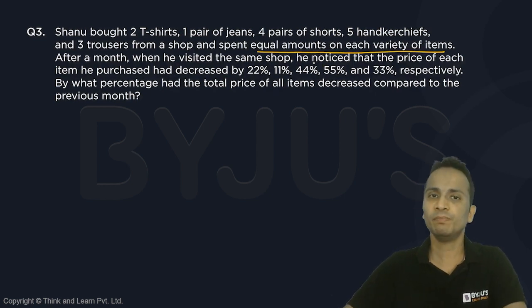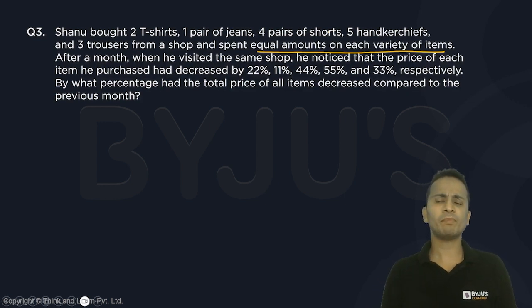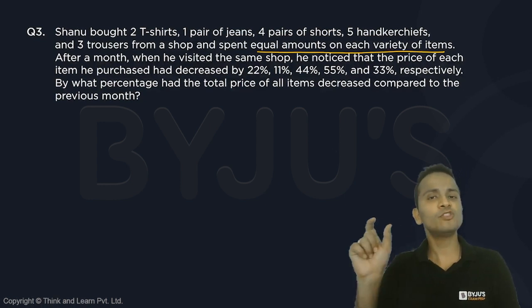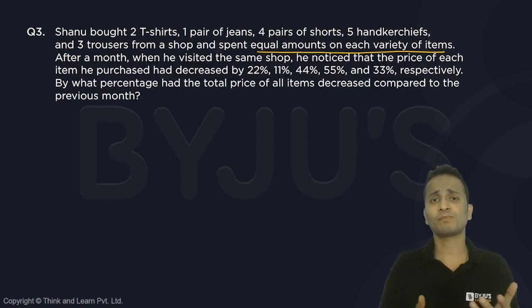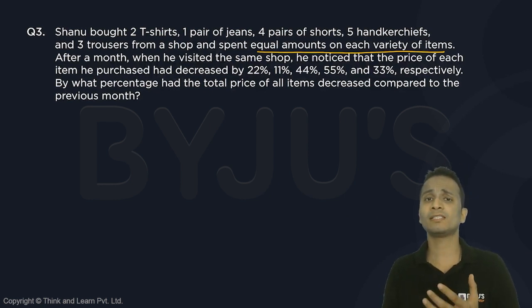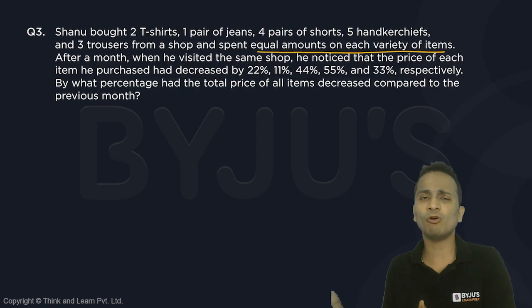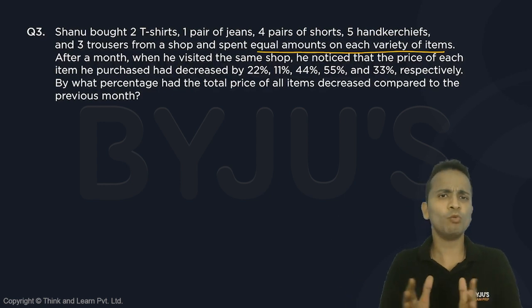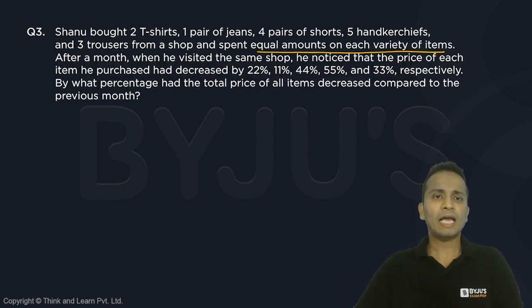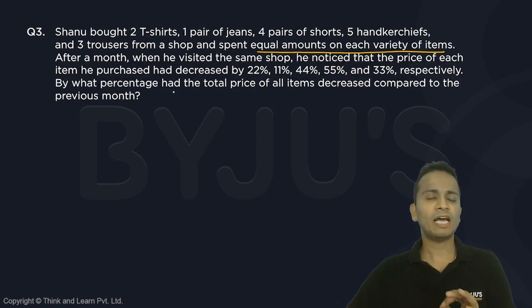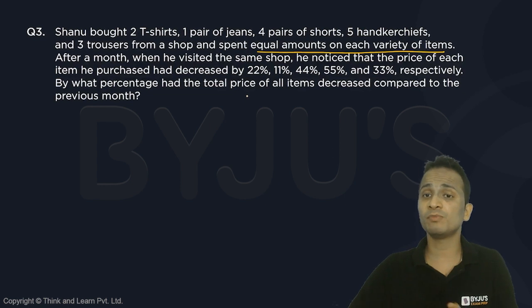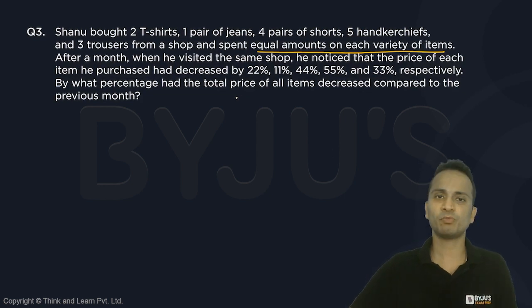This statement is very important. What you can do is start by assuming the money spent on each of these varieties as X, or any number — P, 100, 1000, whatever you want to assume. Then there is a reduction in price, and finally you have to find out by what percentage the total price of all items decreased compared to the previous.